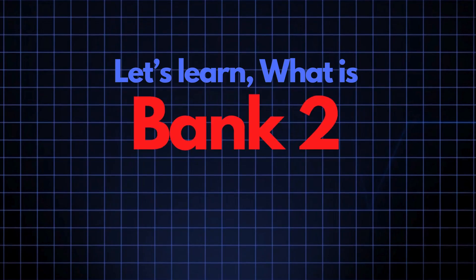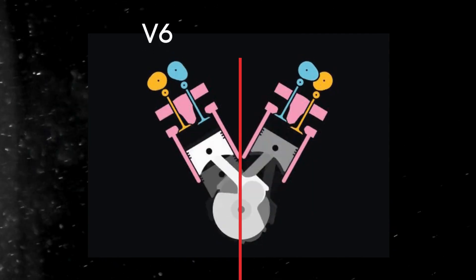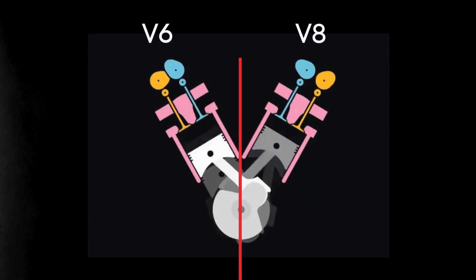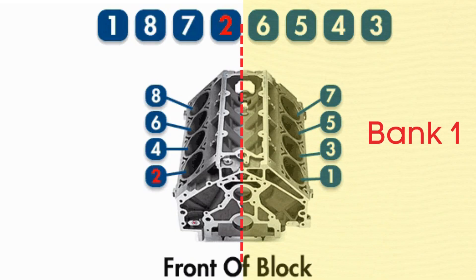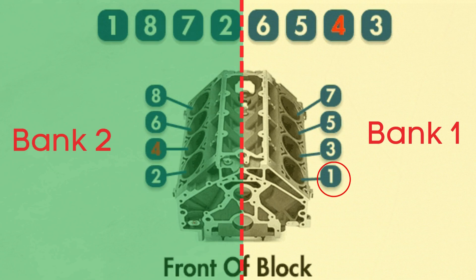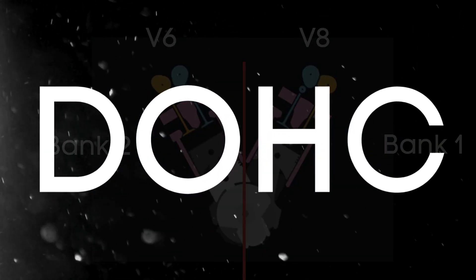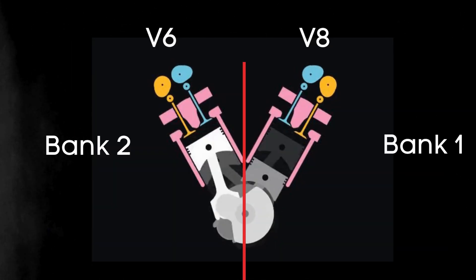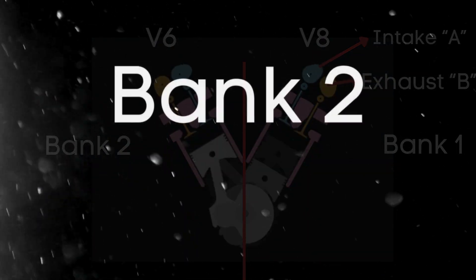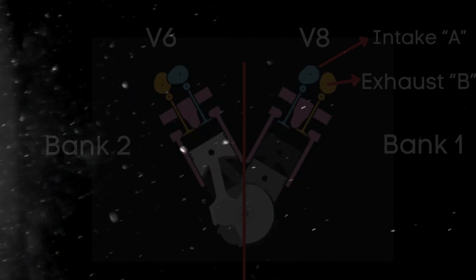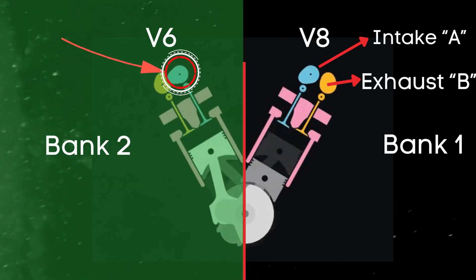In engines with multiple cylinder banks, like V6 or V8 engines, you'll have two sides, or banks, of cylinders. Bank I typically refers to the side of the engine where Cylinder 1 is located, and Bank II is on the opposite side. For engines with dual overhead camshafts (DOHC), each bank has two camshafts — one for intake valves and one for exhaust valves. So the Bank II intake camshaft controls the intake valves on the opposite side of the engine from Cylinder 1.